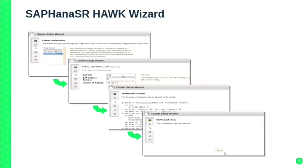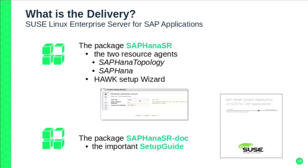The wizard is very simple — it only needs three parameters: the SAP system ID (SID), the SAP instance, and the virtual IP address. From those three parameters, we generate the cluster rules and you're done. For other scenarios it's a bit more complex. The package is delivered in the SUSE Linux Enterprise Server for SAP applications — not in the HAE extension, only in the Enterprise Server for SAP applications. It includes the wizard, the packages, and an installation and setup guide, so it's all there ready to go.